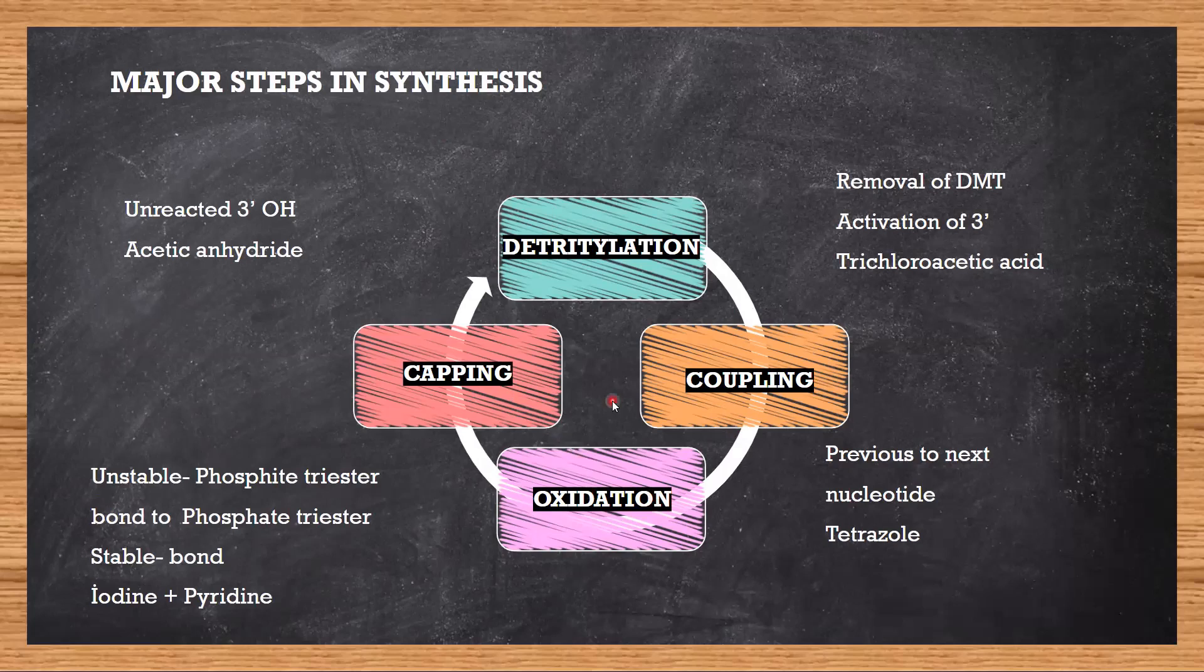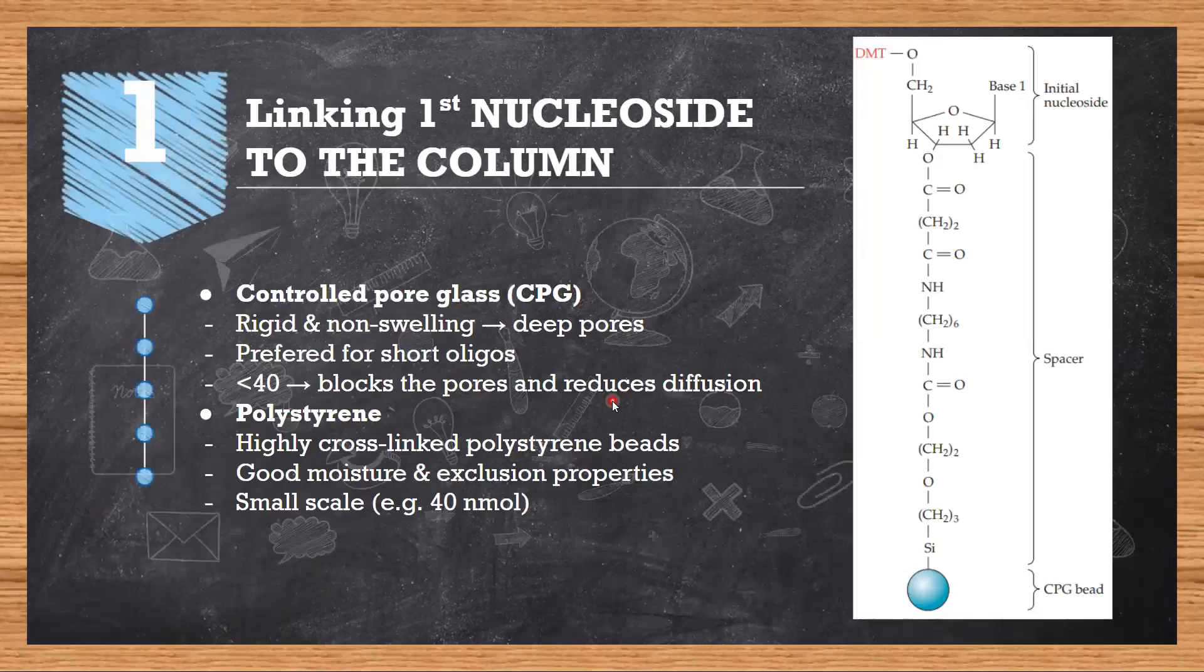First, you have to link the nucleotide to the column. The method we are going to study is called solid phase oligonucleotide synthesis, and why the name solid? Because our nucleotides are attached to a solid support.